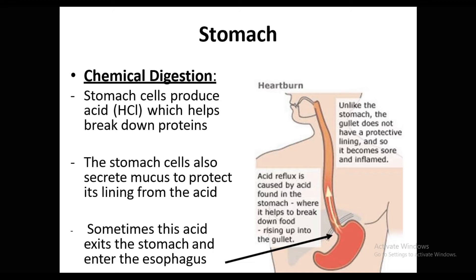Stomach chemical digestion: the stomach cells produce acid which breaks down proteins. I'll give you a short video so you can see the effect of the acid. The stomach cells also secrete mucus to protect its lining. You may wonder — if the acid is so active, how does it protect our stomach? It is because of this mucus lining.